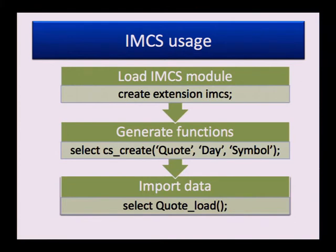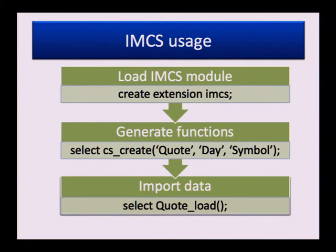Once we generate functions and types — for the quote table, this function generates a 'quote_time_series' type which has the same attributes with the same names as the quote table, but the type of each attribute is 'time series'. Once functions are generated, we can import data. Import can be done explicitly using the generated load method, implicitly when data is first accessed and IMCS finds the columnar store is empty, or incrementally using triggers when data is inserted into Postgres.